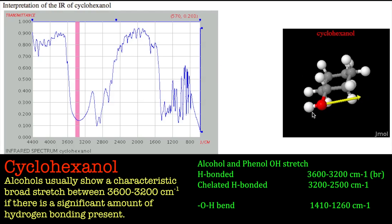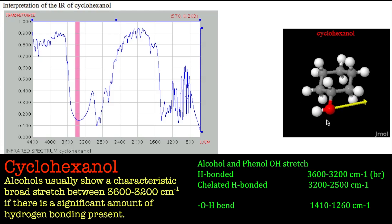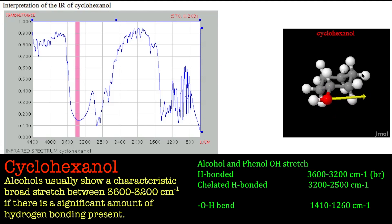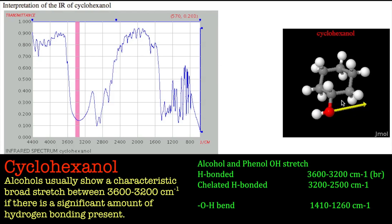If you look at the vector, or the vibrational frequency for that, you can see a very pure OH stretch — there's no other part of the molecule vibrating, it's just the OH stretch. It requires quite a bit of energy, which is why it appears up at about 3340 wavenumbers.